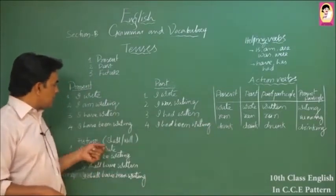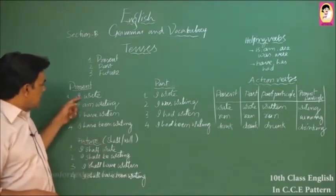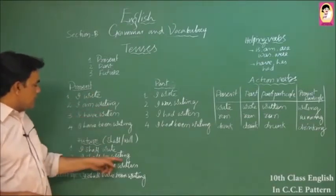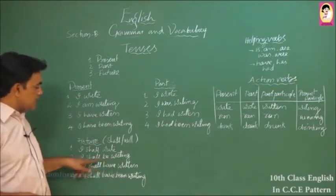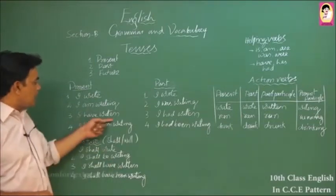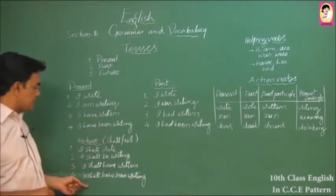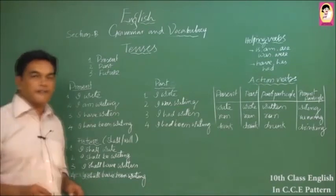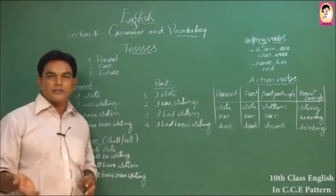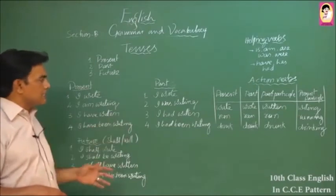Notice the similarity: 'I write' (present simple) becomes 'I shall write' (future simple) — only 'shall' is added. Similarly, 'I am writing' becomes 'I shall be writing' (future continuous); 'I have written' becomes 'I shall have written' (future perfect); and future perfect continuous follows the same pattern as present perfect continuous, just with 'shall' added.